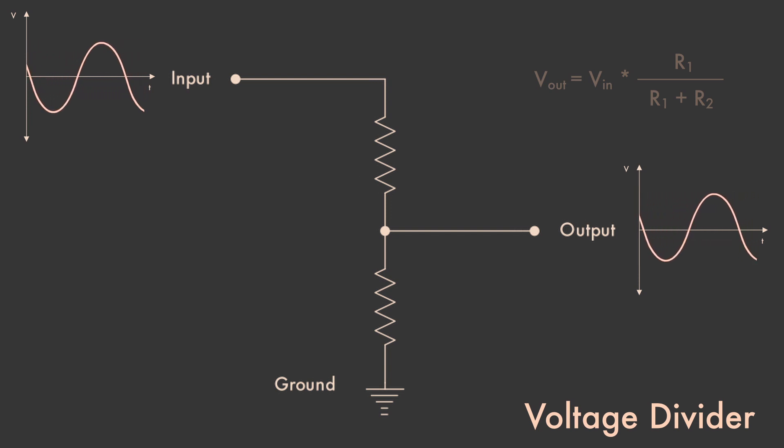The smaller the lower resistor is, the closer the output voltage is going to be to the ground voltage. The voltage differential between the top and bottom, between our signal and ground, is divided by the resistors.